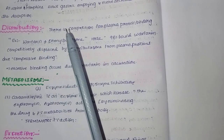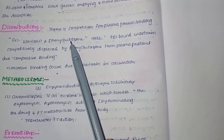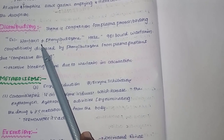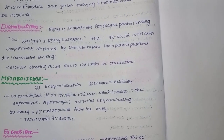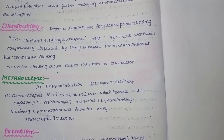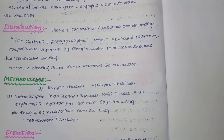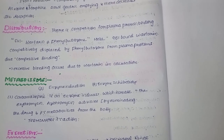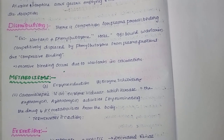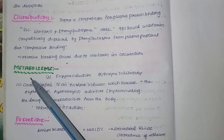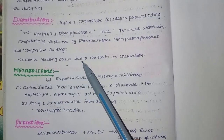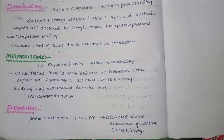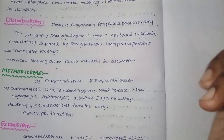When phenylbutazone displaces warfarin from plasma protein binding sites, free warfarin in the blood increases. This leads to excessive bleeding due to warfarin in circulation. Remember this interaction.